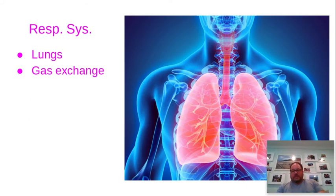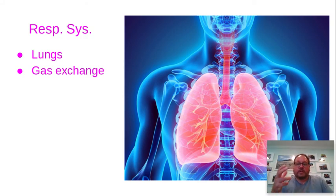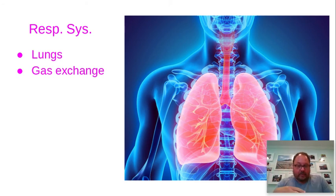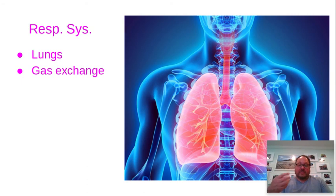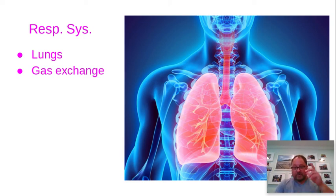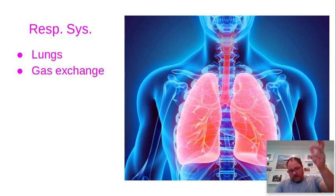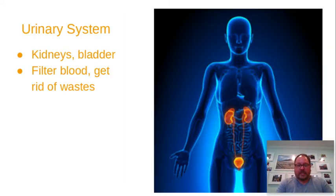Your respiratory system is another system that has one function: gas exchange. Your cells produce carbon dioxide, which is toxic to the body, so they dump that CO2 into your blood. Your cells also need oxygen to make ATP to keep you running. So your lungs are an interface that allow rapid transmission of gases — you blow CO2 out with each breath and take oxygen in with each breath.